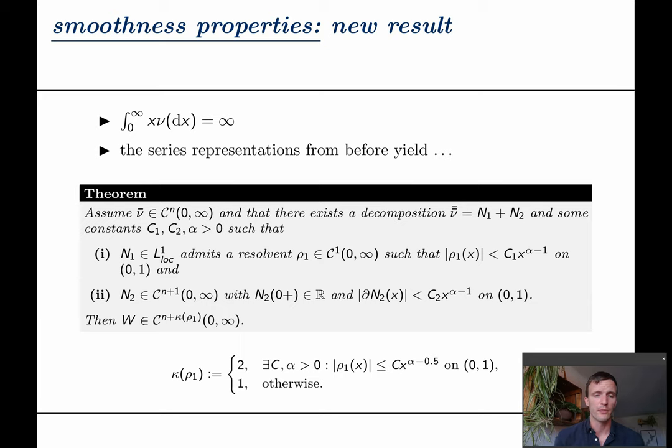Using the series representations from before, we obtain for the remaining case that is paths of unbounded variation without Gaussian component this following theorem. Here we link the smoothness of the tail function to the smoothness of the scale function where κ is either 1 or 2.